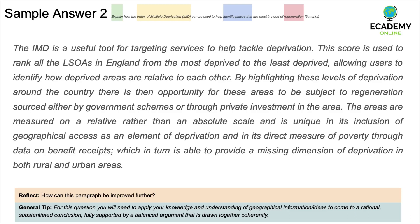'These areas are measured on a relative rather than absolute scale, and the IMD is unique in its inclusion of geographical access as an element of deprivation and its direct measure of poverty through data on benefit receipts, which provides a missing dimension of deprivation in both rural and urban areas.' This reasserts the previous point — it would be better to move on to a separate third point. Valid points are made throughout, but it needs a little more contextualisation, is a bit vague in places, and a third distinct point would be very helpful.